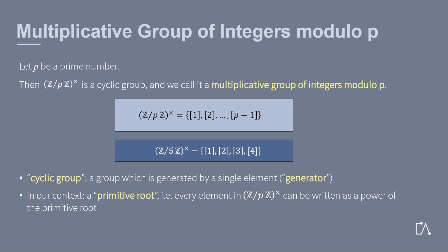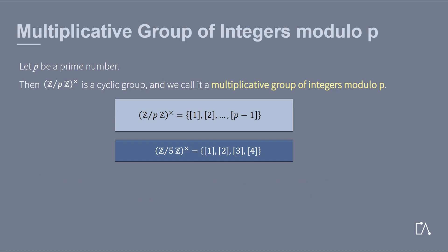Let's consider this for our example. We claim that 2 is a primitive root of the multiplicative group of integers modulo 5.